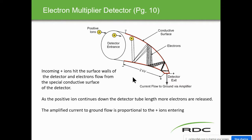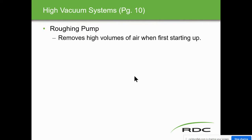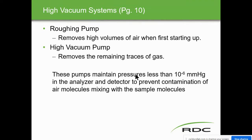The electron multiplier detector: the positive ion enters and bounces along the conductive surface walls of the detector tube, losing electrons with each bounce. There is 2,000 volts across the detector tube. As the positive ions continue down the tube, more electrons are released from the conductive surface and flow to the detector, generating a current to ground via an amplifier. The amplified current flow to ground is proportional to the positive ions entering.